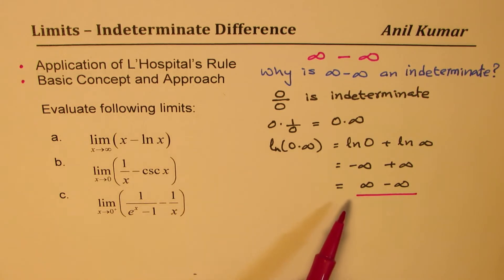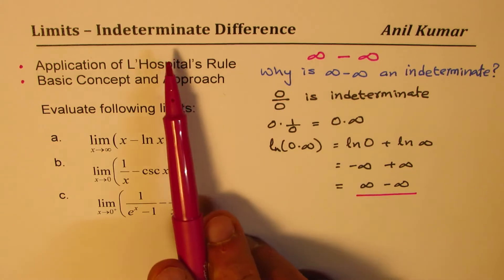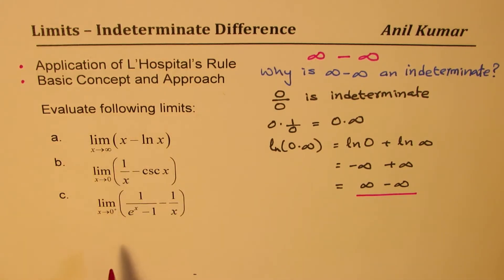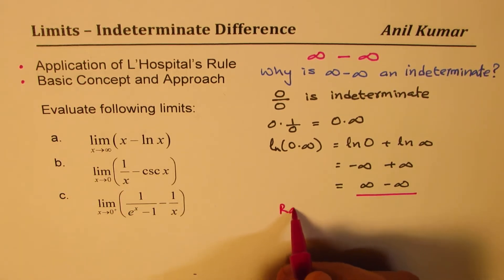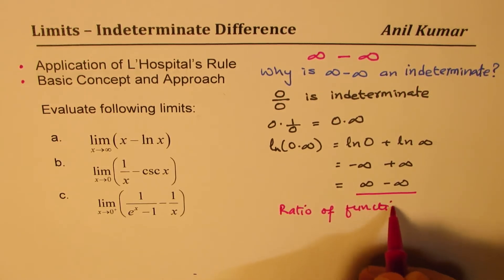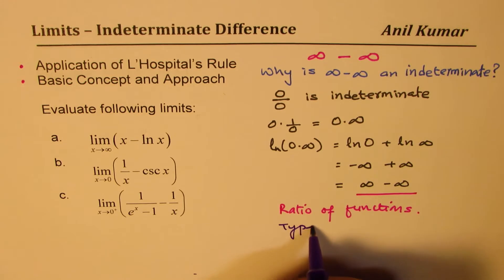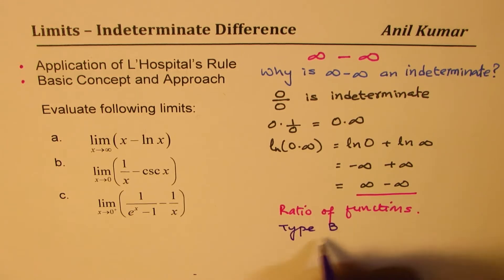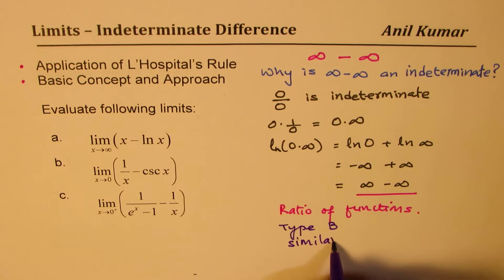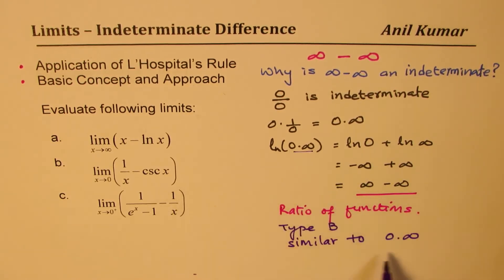That is how we conclude that infinity minus infinity is also an indeterminate. The strategy to solve questions related to infinity minus infinity indeterminate differences is to write the expression as a ratio of functions. We classify this in our category of type B, similar to zero times infinity.